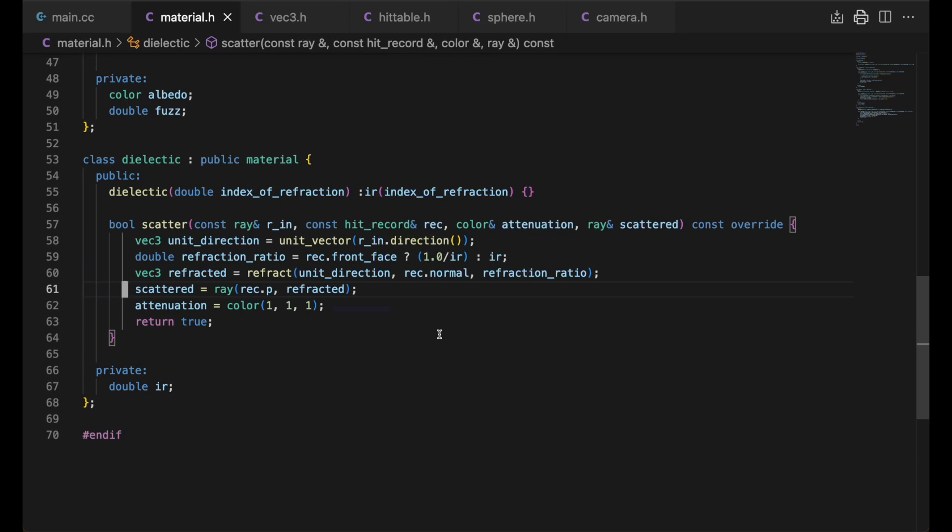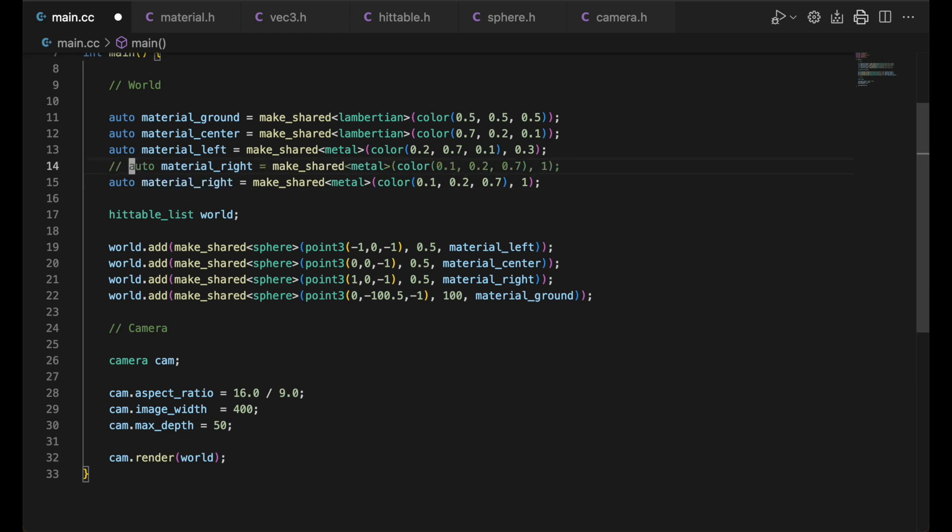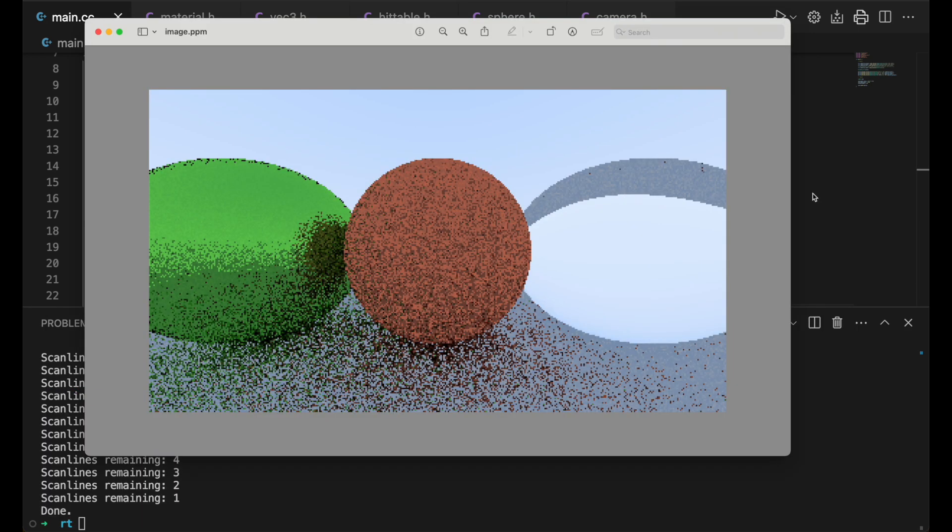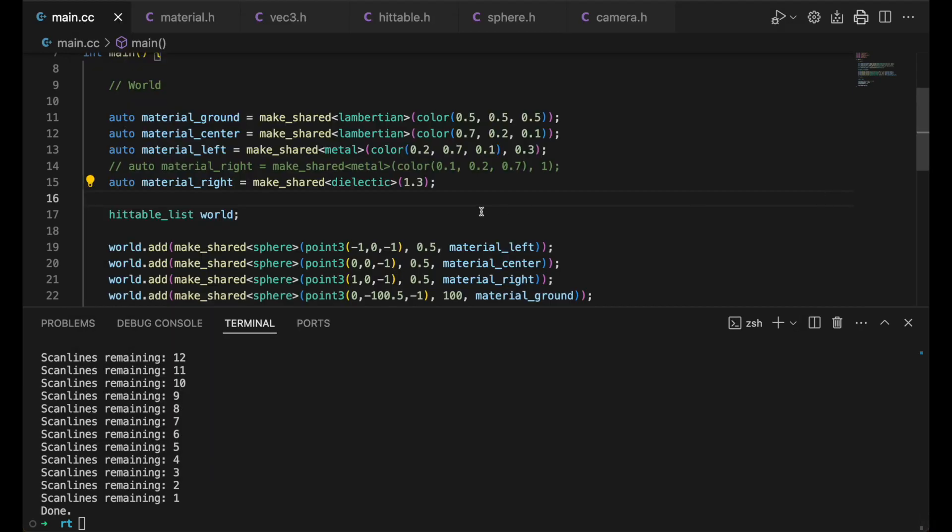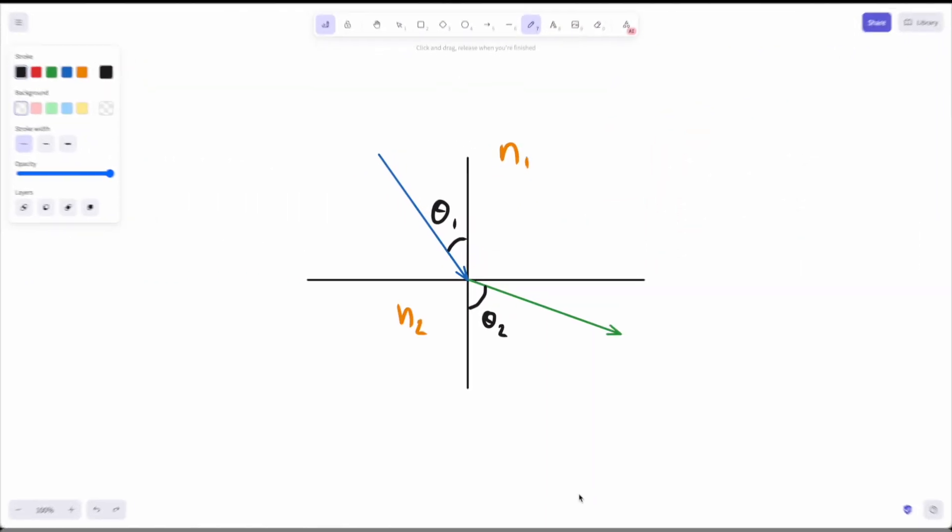And we're ready to see it in action. We'll make the right material dielectric, with its index 1.3. Let's run and see what we get. Looks good. What do you suppose will happen if we set the index to 1? Hope that makes sense.